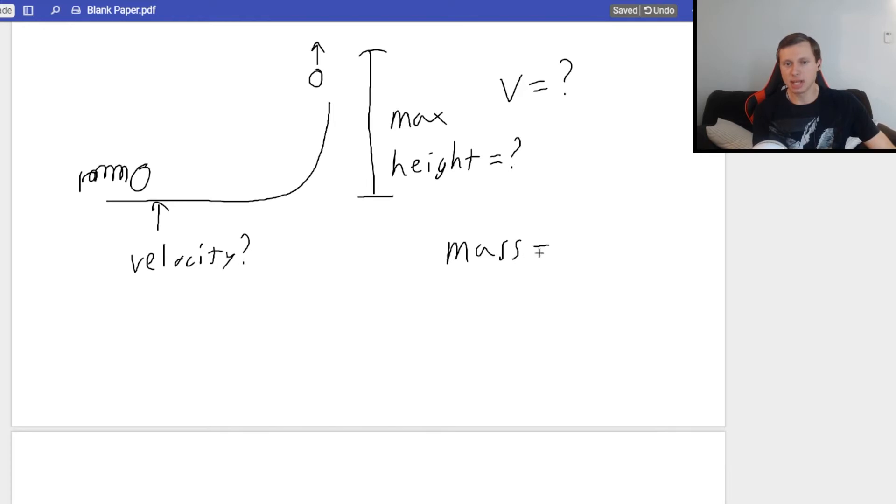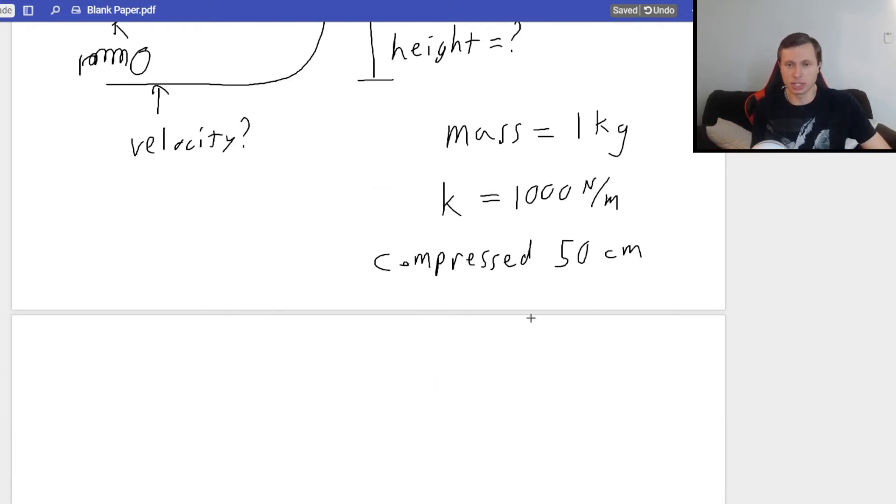Number one, I want to know what's the velocity when it leaves the spring, pretty much what's the velocity at that point right there after it leaves the spring. And then the second thing I want to know is what is the max height that this thing reaches. Let me give you some variables now. I'm going to tell you that mass, the mass of this object, I'll be easy for once, I'm going to say one kilogram.